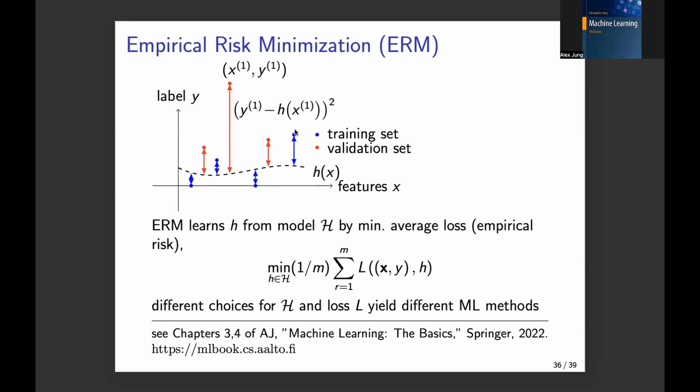So we have here, for example, we have a data point, a blue data point. And we want to measure the prediction error as the difference between the true label of the data point and the predicted label. This is the function value, h of x.